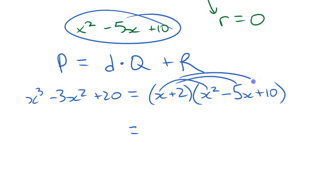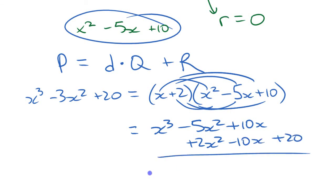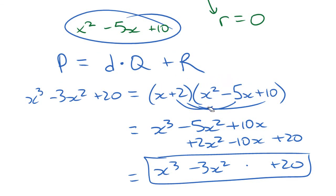You can expand to check: multiply out to get x cubed minus 5x squared plus 10x, then the other three terms: plus 2x squared minus 10x plus 20. Combining gives x cubed minus 3x squared plus 20 — exactly what we started with. It's always good to understand the check statement and use it to verify you've done things right.